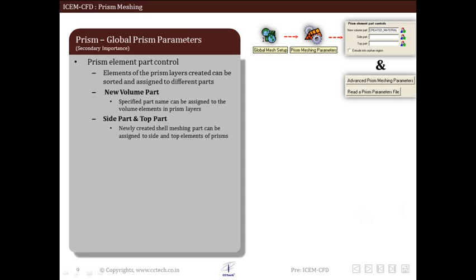This is the part name for prism elements created, and then is the side and top part. During the creation of prism layers new shell elements will be created and they can be put into different parts using this tab. So these are the three tabs that we have.